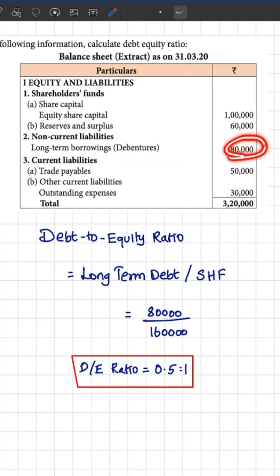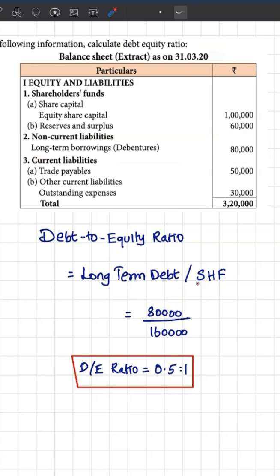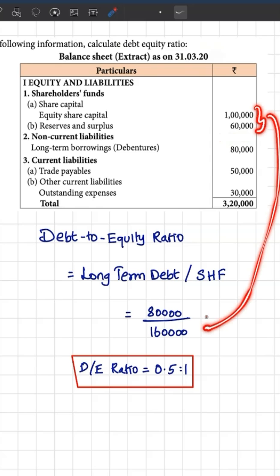In this case, the long-term debt is 80,000. The denominator is shareholders' funds, which comprises equity share capital and reserves and surplus, and the total is 1,60,000.